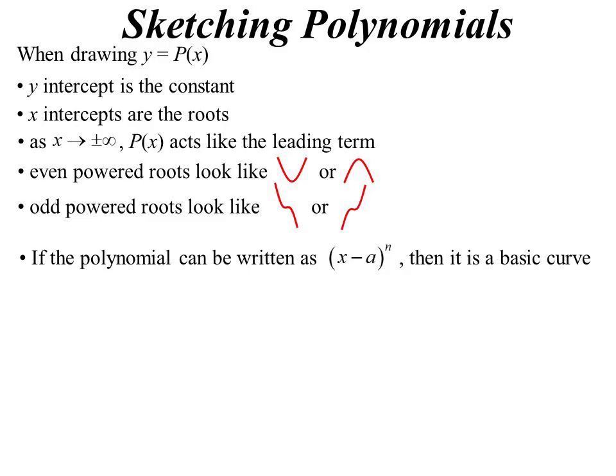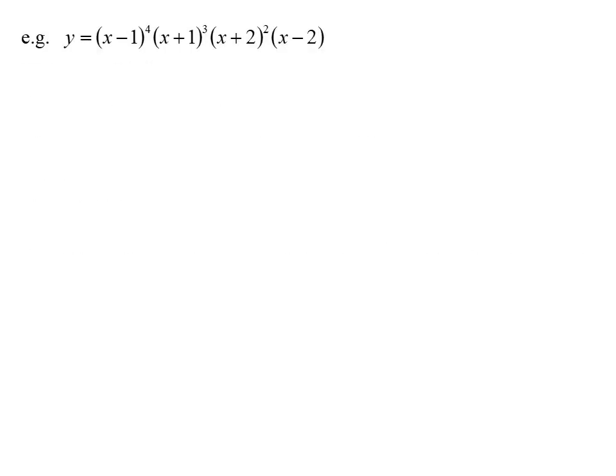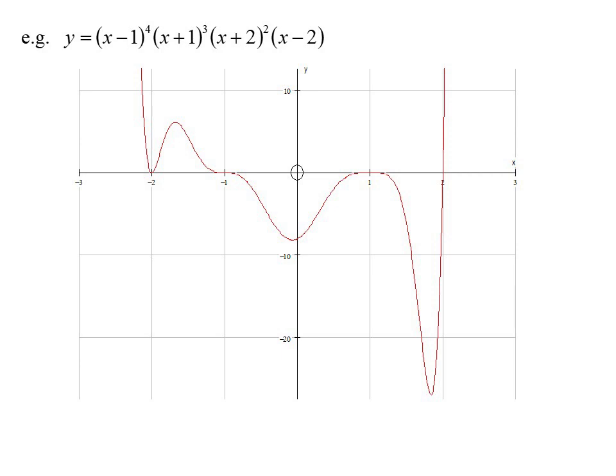If it can be completely factorized, so it's a perfect cube, quartic, whatever, then it's just going to look like the basic curve, because that's what we've got, the basic curve shifted. This one here though. Let's draw it in. There it is. So let's go over all those features again.